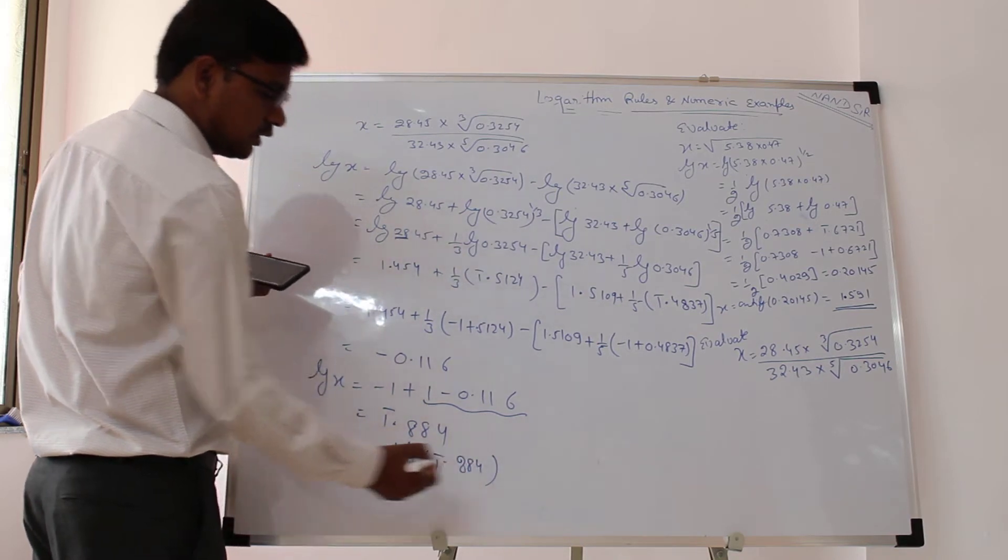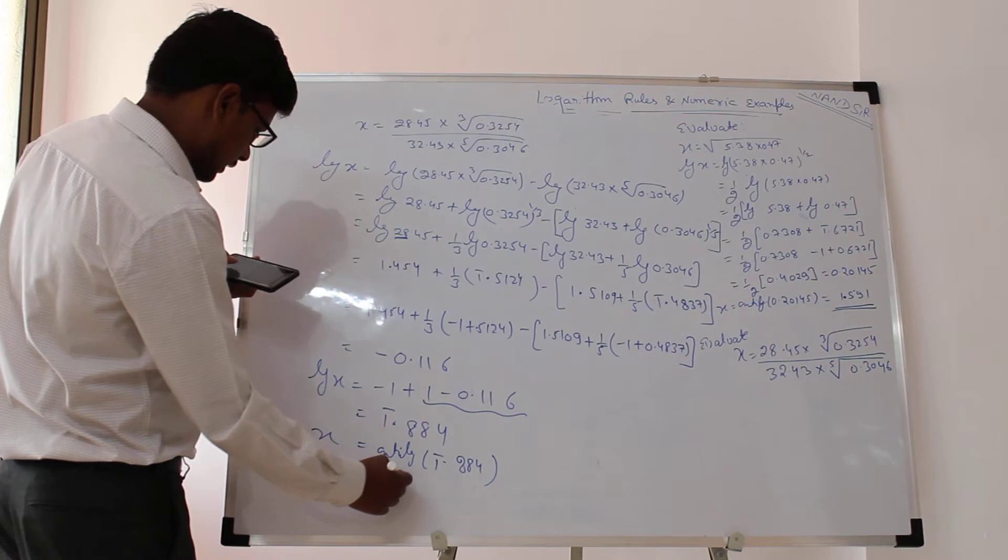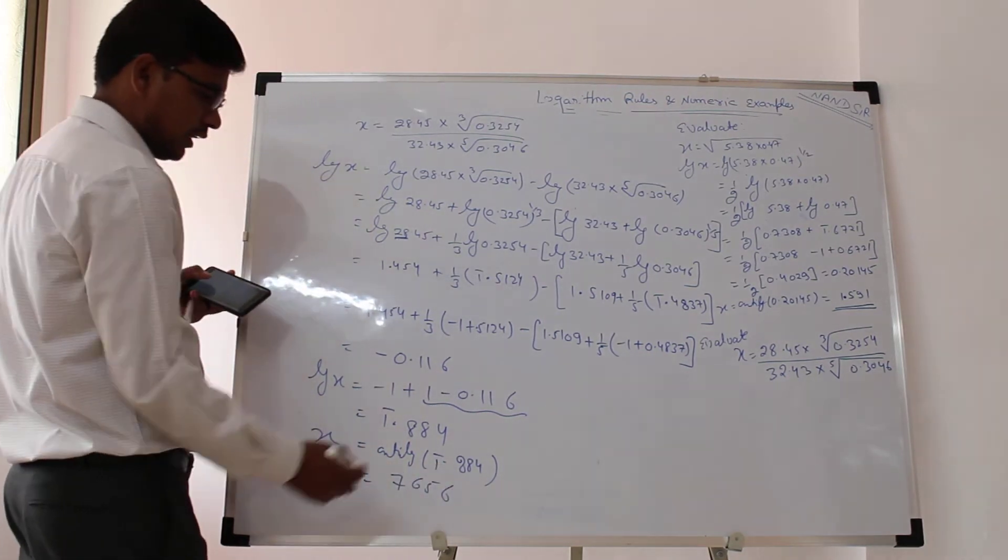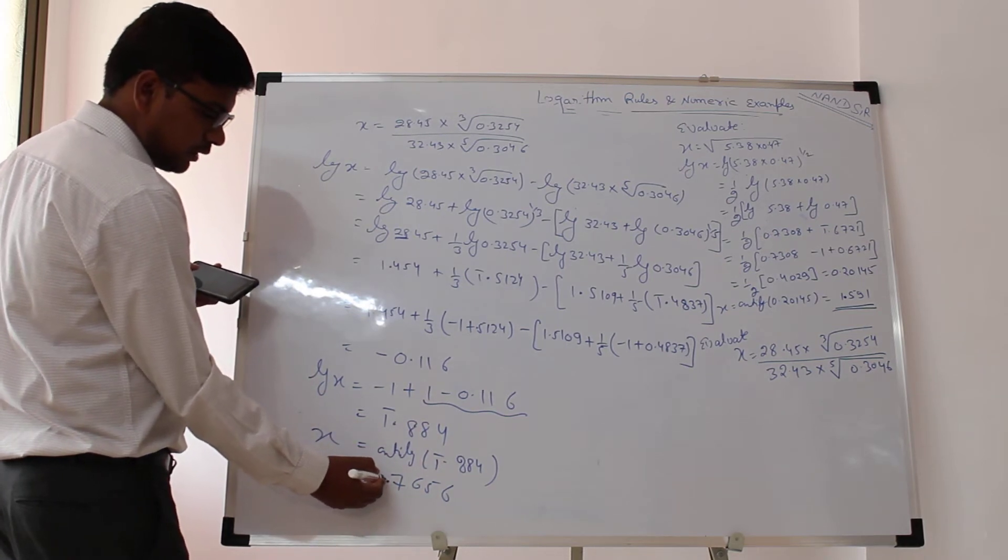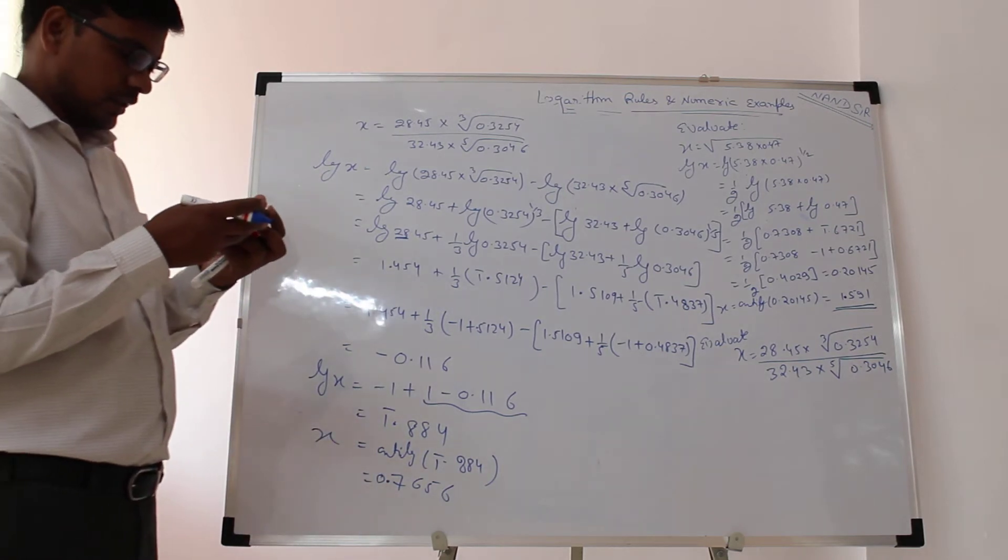So go for the 0.88 row and 4th column, you will get 7656. And this 1 bar means there should be a decimal in the beginning—there is no digit before the decimal.